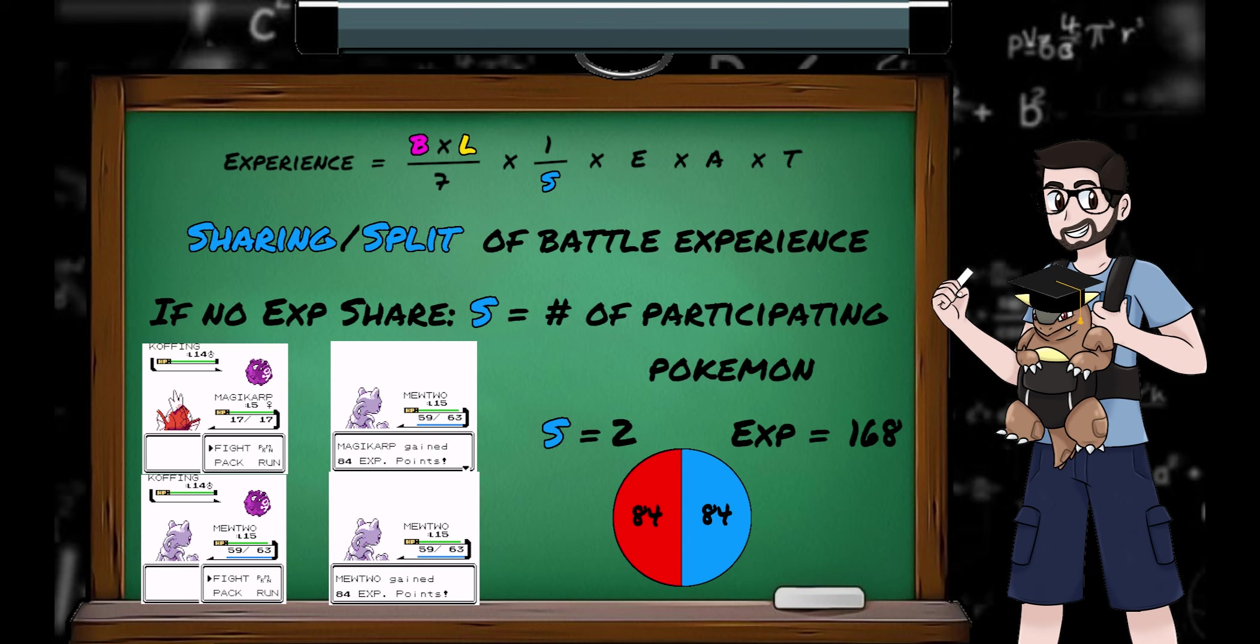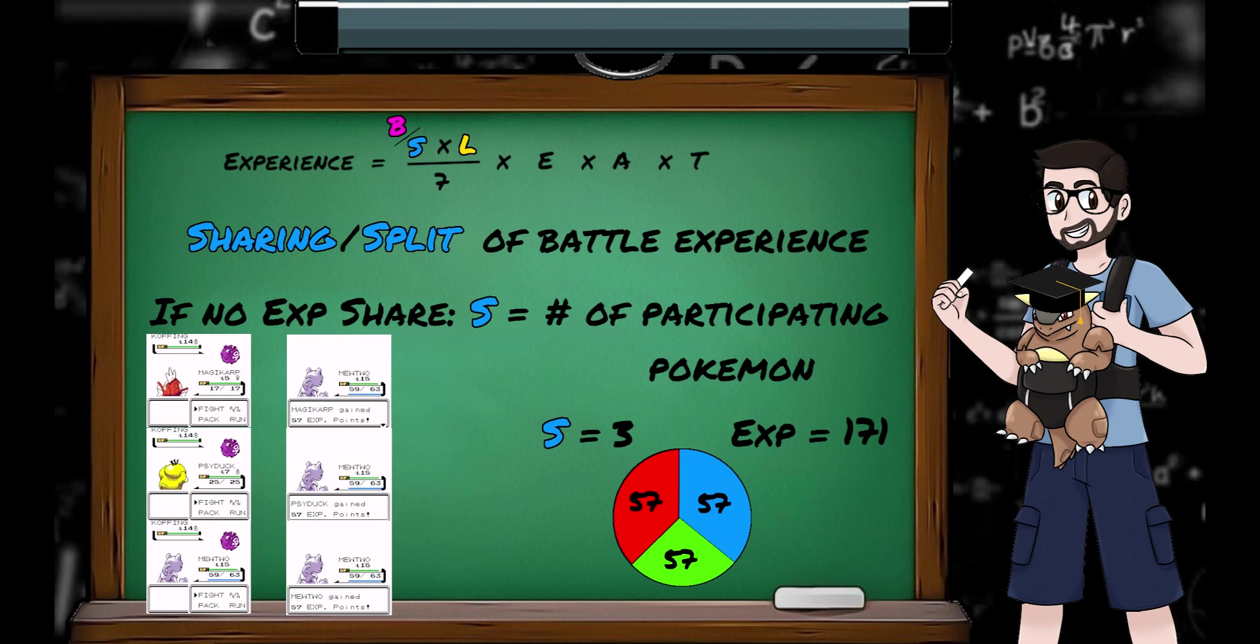Note the value isn't quite equal to half of the amount Mewtwo got when he was going solo, and this is due to rounding, and also where the 1 over S is applied in the equation. As I'm using a generation 2 example here, to calculate these numbers we'd need to be using the generation 2 equation I mentioned earlier. If three non-fainted Pokemon were involved, they'd each receive a third, and so on.